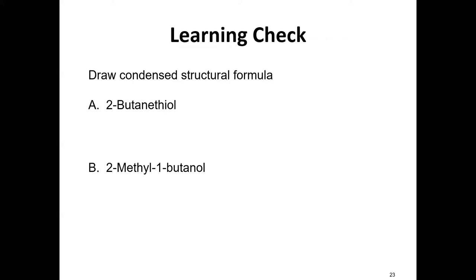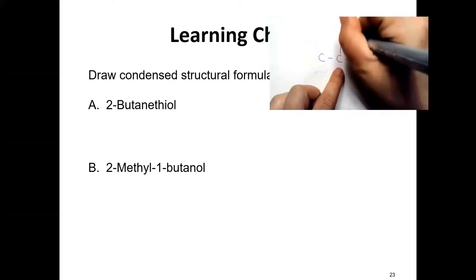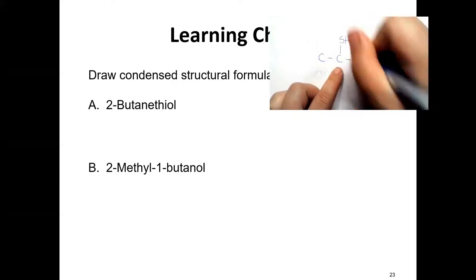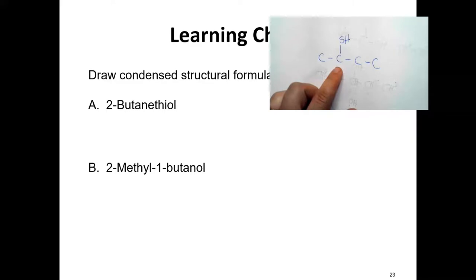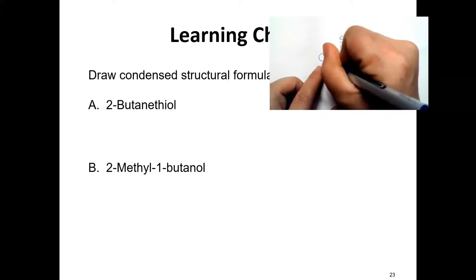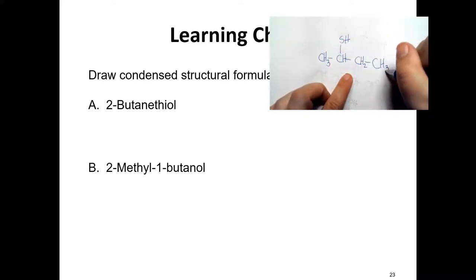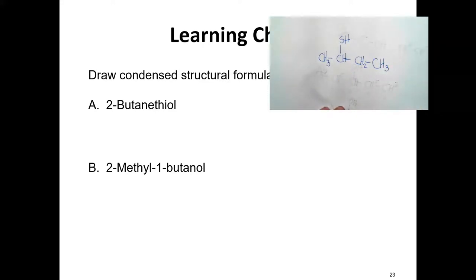Drawing thiols is simple — I won't ask you to draw them, but just to feel comfortable: a 2-butanethiol means four carbons — one, two, three, four. On carbon two is where the SH group is. Fill in the rest so carbon makes four bonds with hydrogen: CH3, CH, CH2, CH3. That's 2-butanethiol.